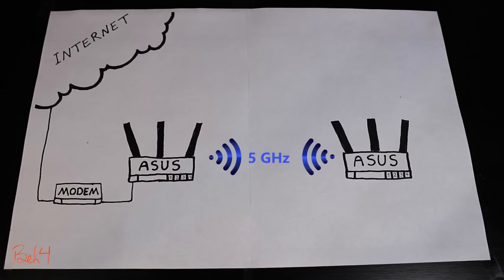That basically means the AI mesh system intelligently decides whether to use the 2.4 GHz band or the 5 GHz band for the connection between the wireless routers. Then it will automatically assign an IP address to the secondary router, and finally it will configure it to broadcast the exact same SSIDs as the primary router.